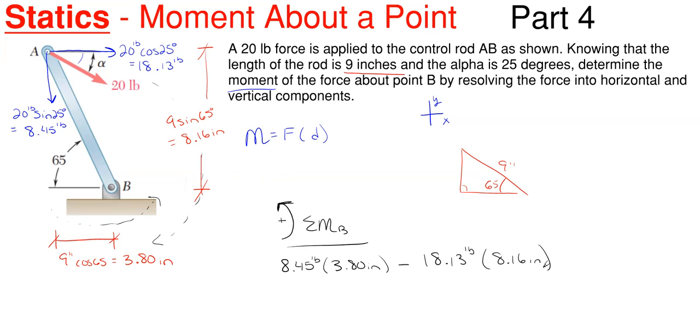And that's all I would have for my summation of forces, or summation of moment about B. And I would end up with minus 115.83 pound inches of moment.